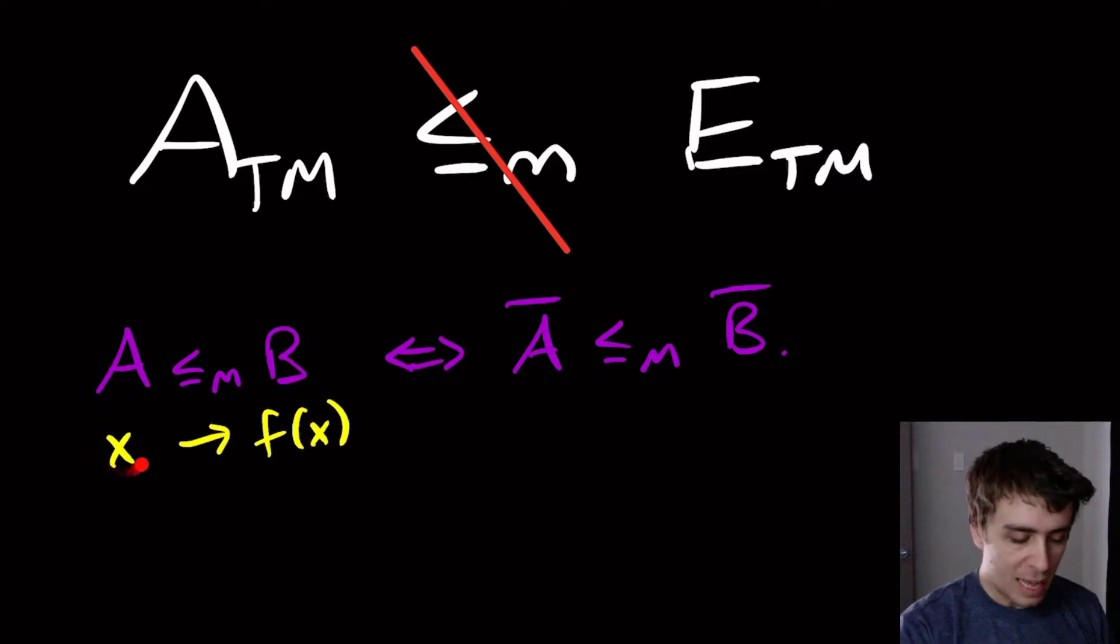So if x is not in A, then f of x is not in B. So the strings that are not in A need to result in something that is not in B, which is exactly what this is saying.